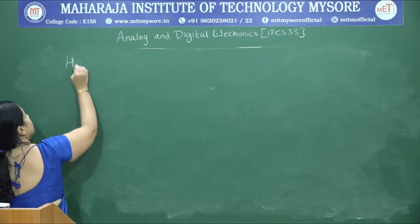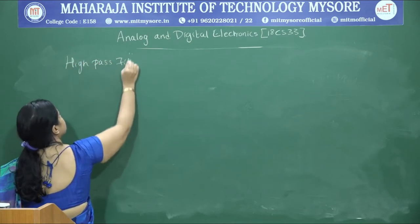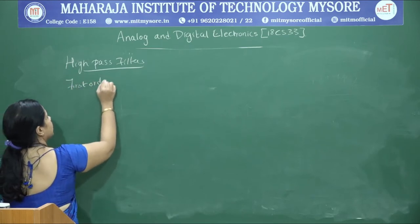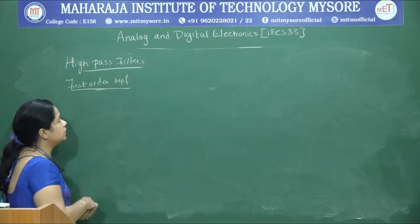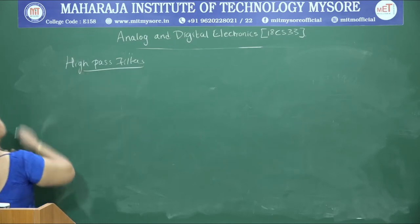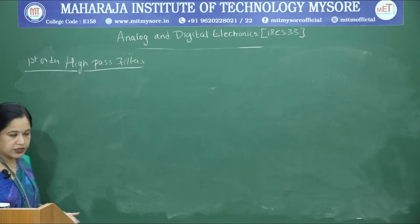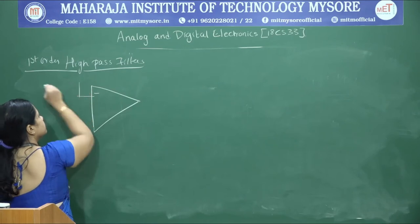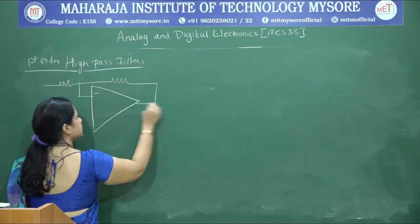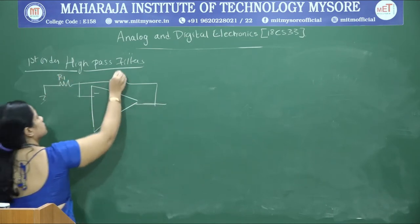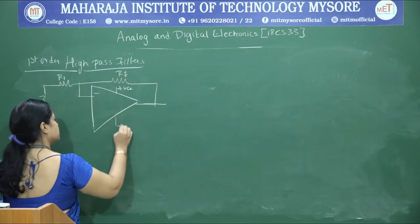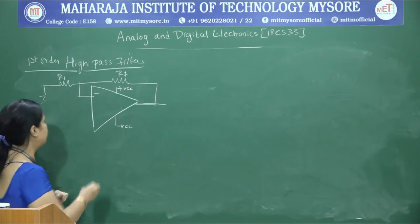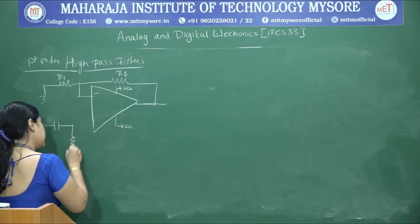We will take up the design of high pass filters. The introduction to high pass filters was given in the previous session, so we will go straight to the design of a first order high pass filter. The design is very similar to your low pass filter. All filters are constructed using negative feedback, which ensures automatic gain control. The input is fed through an RC section. For a low pass filter, the resistance is in series and capacitance is in parallel. For a high pass filter, the capacitance comes in series and resistance comes in parallel.